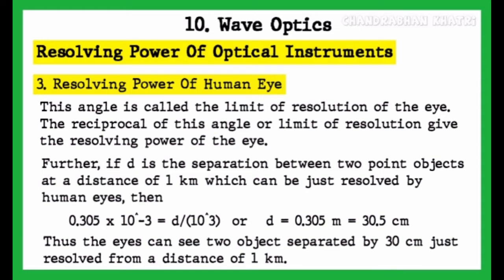This angle is called the limit of resolution of the eye. The reciprocal of this limit of resolution gives the resolving power of the eye. Further, if small d is the separation between two point objects at a distance of 1 kilometer which can be just resolved by human eyes, then 0.305 into 10 raised to power minus 3 equals small d upon 10 raised to power 3. Calculating, small d equals 0.305 meter, that is 30.5 centimeter. Thus, the eye can just resolve two objects separated by 30 centimeters from a distance of 1 kilometer.